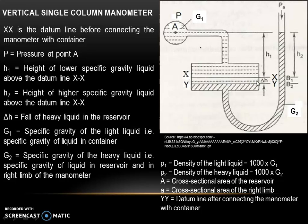Let XX be the datum line before connecting the manometer with the container. P is the pressure at point A. H1 is the height of the lower specific gravity liquid above datum line XX. H2 is the height of the higher specific gravity liquid above datum line XX. Delta H is the fall of heavy liquid in the reservoir. G1 is the specific gravity of the light liquid in the container, and G2 is the specific gravity of the heavy liquid in the reservoir and in the right limb of the manometer.